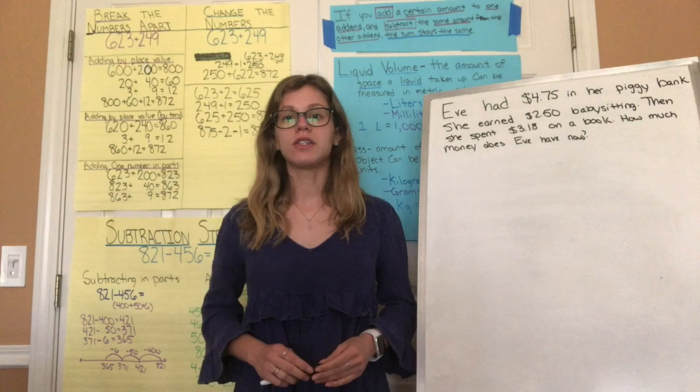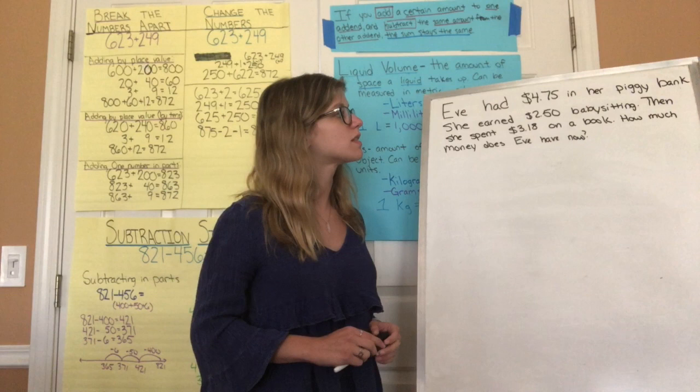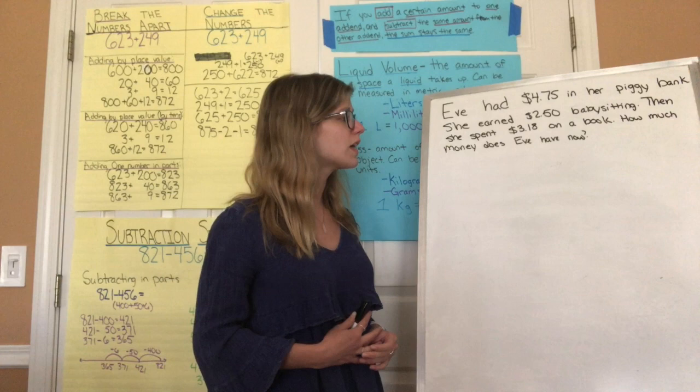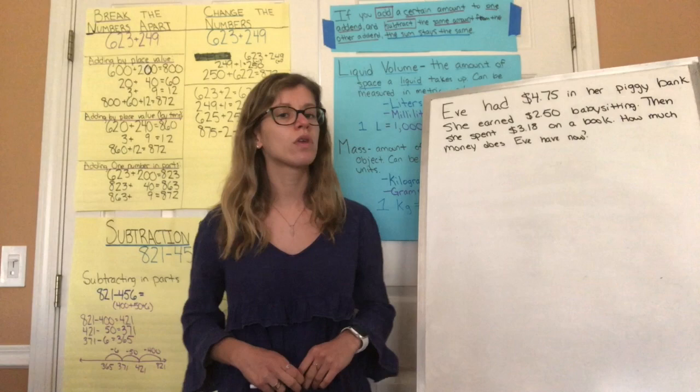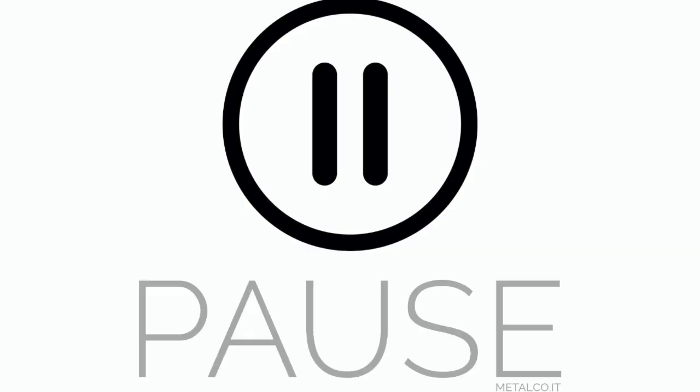I have a story problem here that involves money. I'm going to read it and then ask you to solve it by yourself. It says: Eve had four dollars and seventy-five cents in her piggy bank. She earned two dollars and fifty cents babysitting, then she spent three dollars and eighteen cents on a book. How much money does Eve have now? Take notes and make an equation that represents this problem.